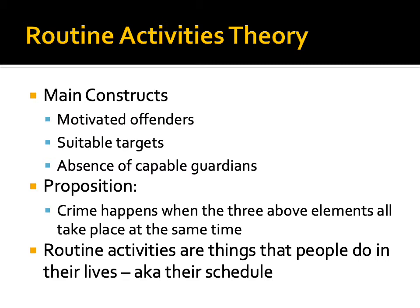The main constructs or variables within routine activities theory are motivated offenders, suitable targets, and absence of capable guardians. The basic proposition of the theory is that crime is going to happen when all three of these elements take place at the same time — there's this convergence of time and space with these three variables. If you remove any one of those variables from the equation, crime won't happen.